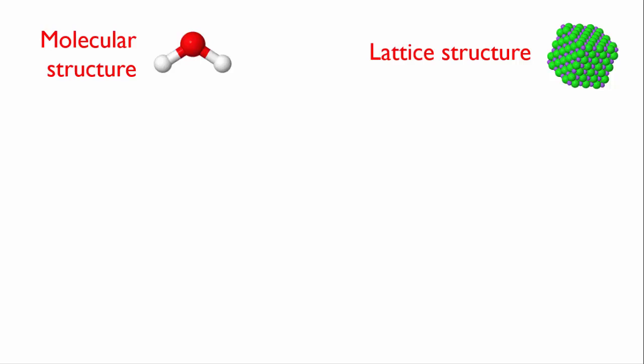We can now classify chemical substances according to whether their bonding creates separate individual molecules or if it causes a three-dimensional network, which we call a lattice.